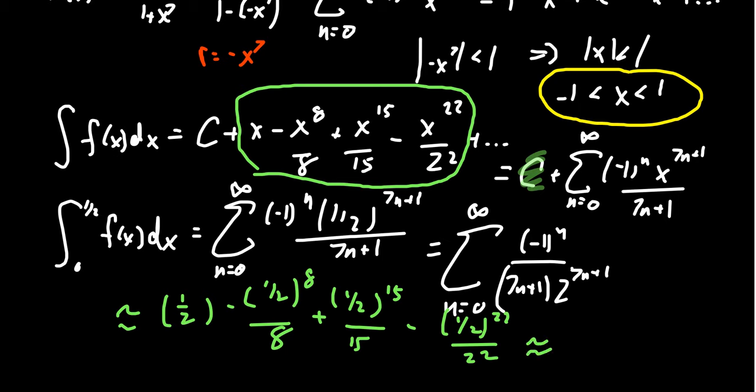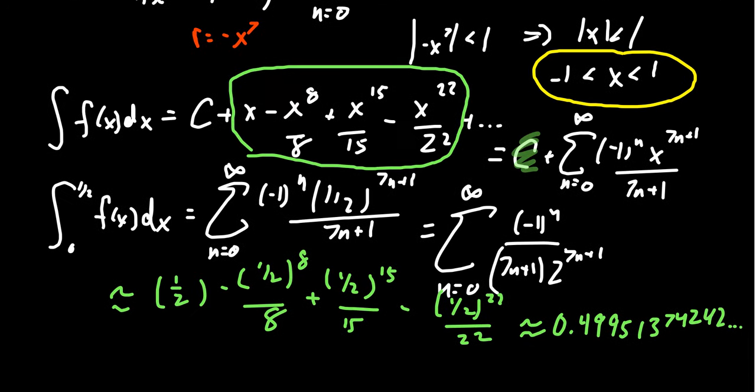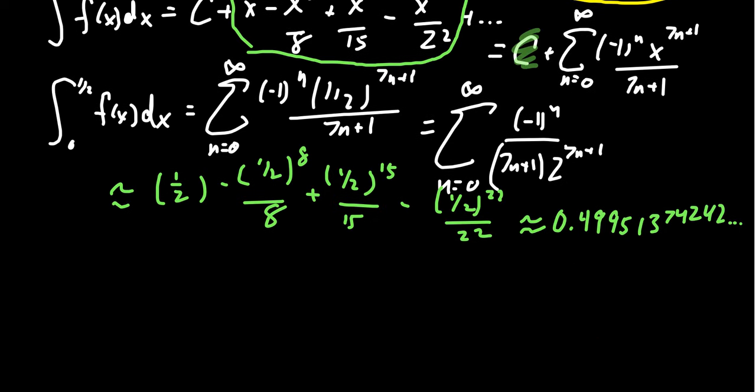And if we approximate this, you can put this in a calculator, it's not too difficult to do, but in a calculator, you'll get 0.49951374242 and so on. It's a rational number, but it'll repeat over and over again. But we're good with this approximation right here. And so this is our approximation. It's about one half itself.